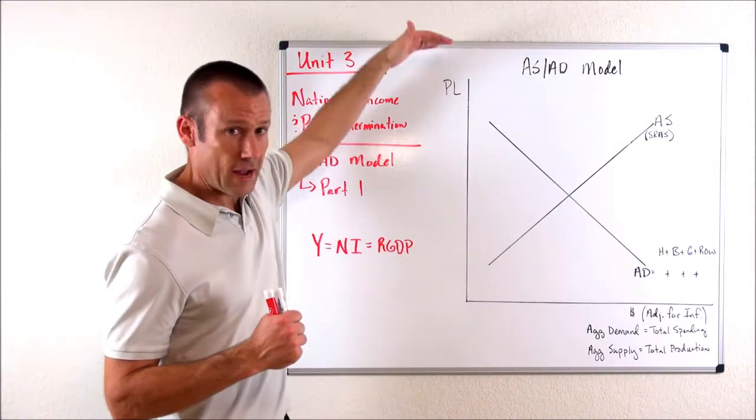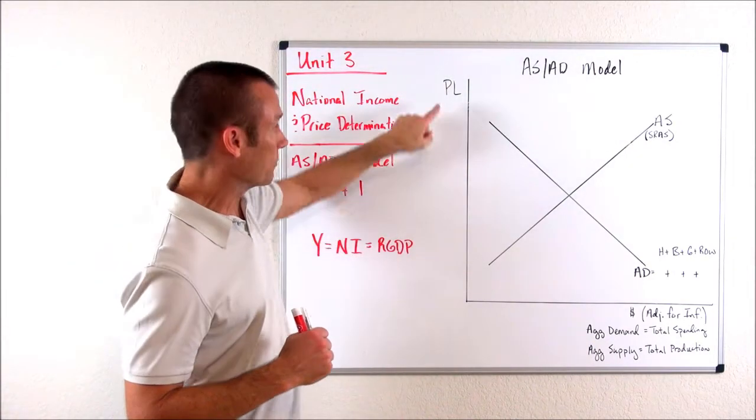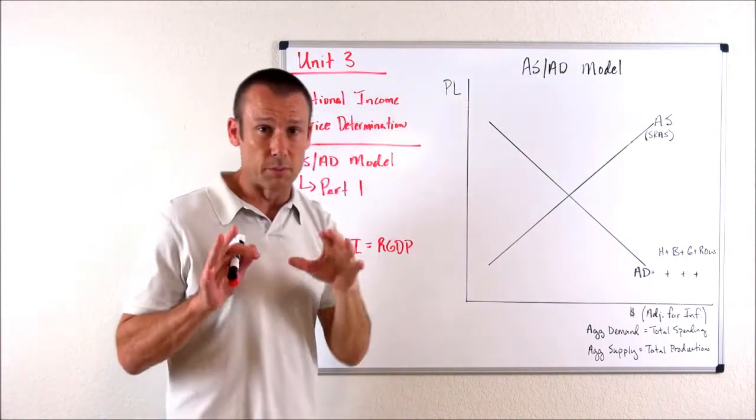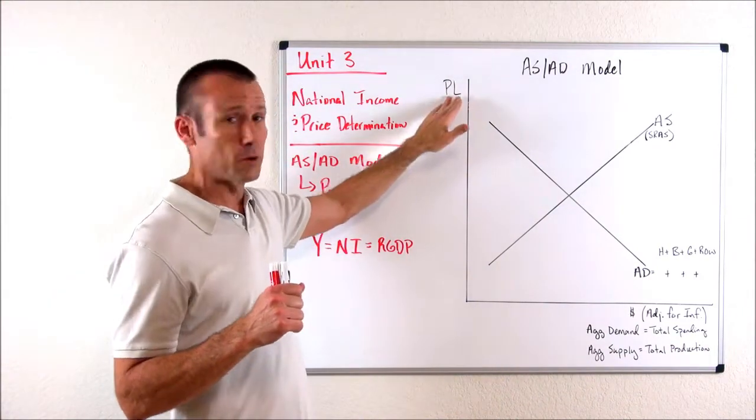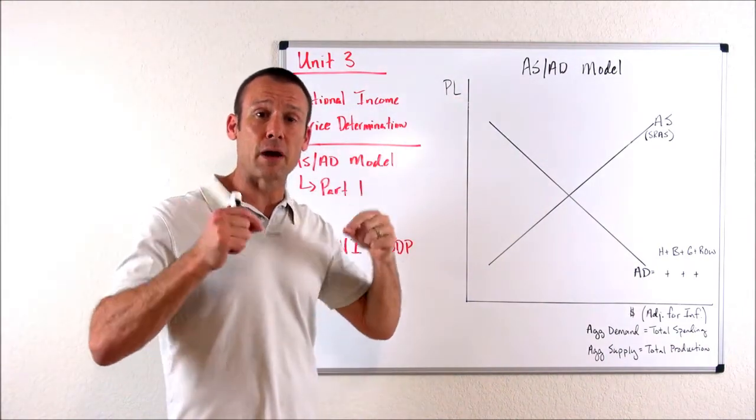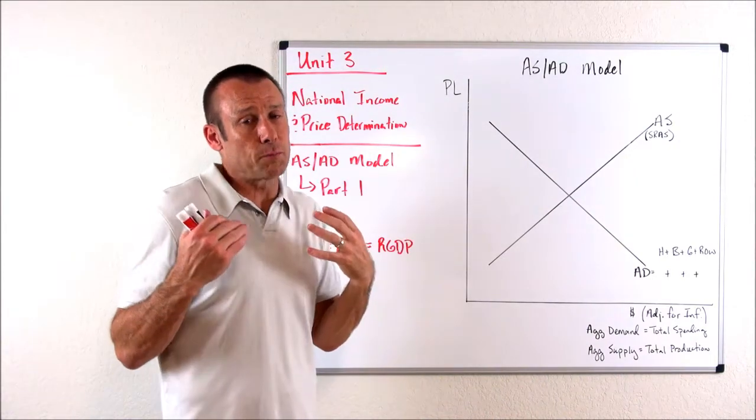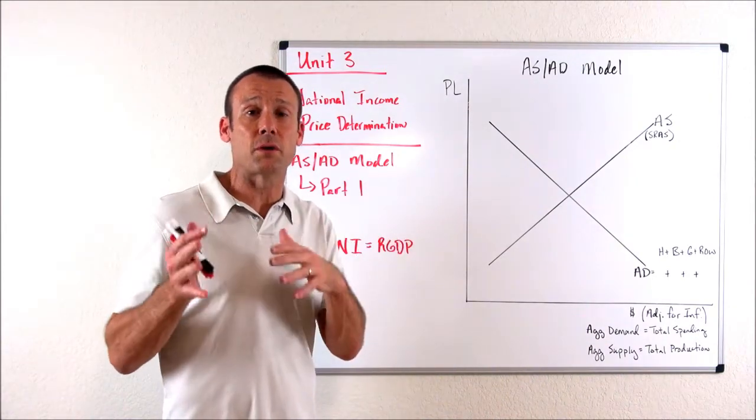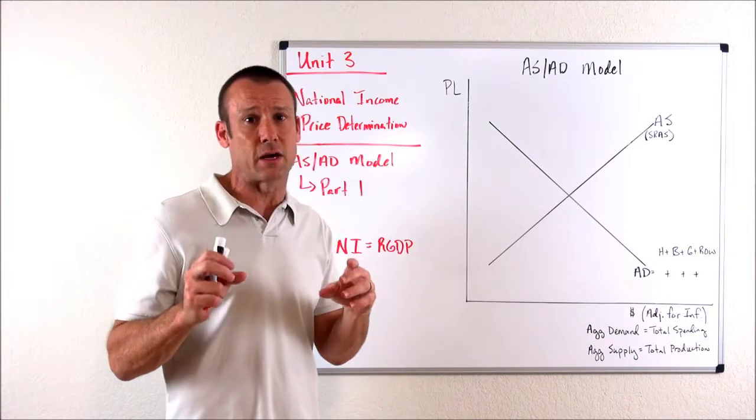First, the vertical axis. What are we measuring vertically? We're measuring the price level. Remember, it is super important. You never put price right there. You need to put price level. Price, when we put price, that harkens back to the supply and demand graphs that only looked at a single product.